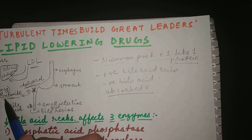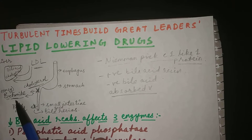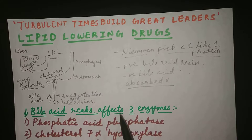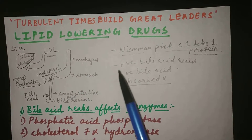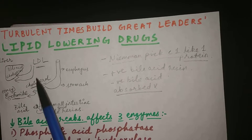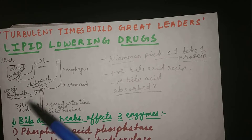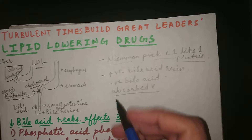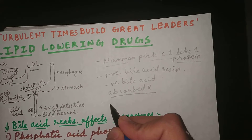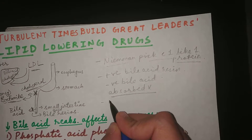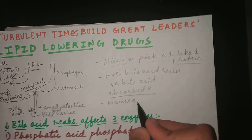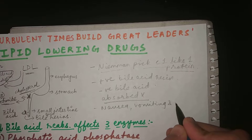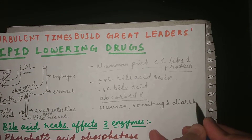It is good to know that after statins, ezetimibe is the second most commonly prescribed drug because it is showing good results in recent studies. Now let's discuss the side effects of both drugs. The common side effects — every medical student's favorite — are nausea, vomiting, and diarrhea.